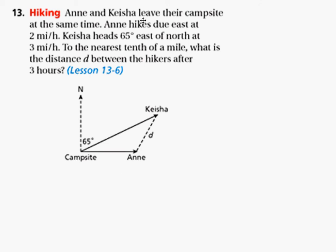Alright, so if it's 3 hours, let's do some computing. So, Keisha, let's see, Anne hikes due east at 2 miles an hour. So if she hikes for 3 hours, how many miles has she gone? 2 times 3 would give me 6. Right, that's what I would think that length would be.